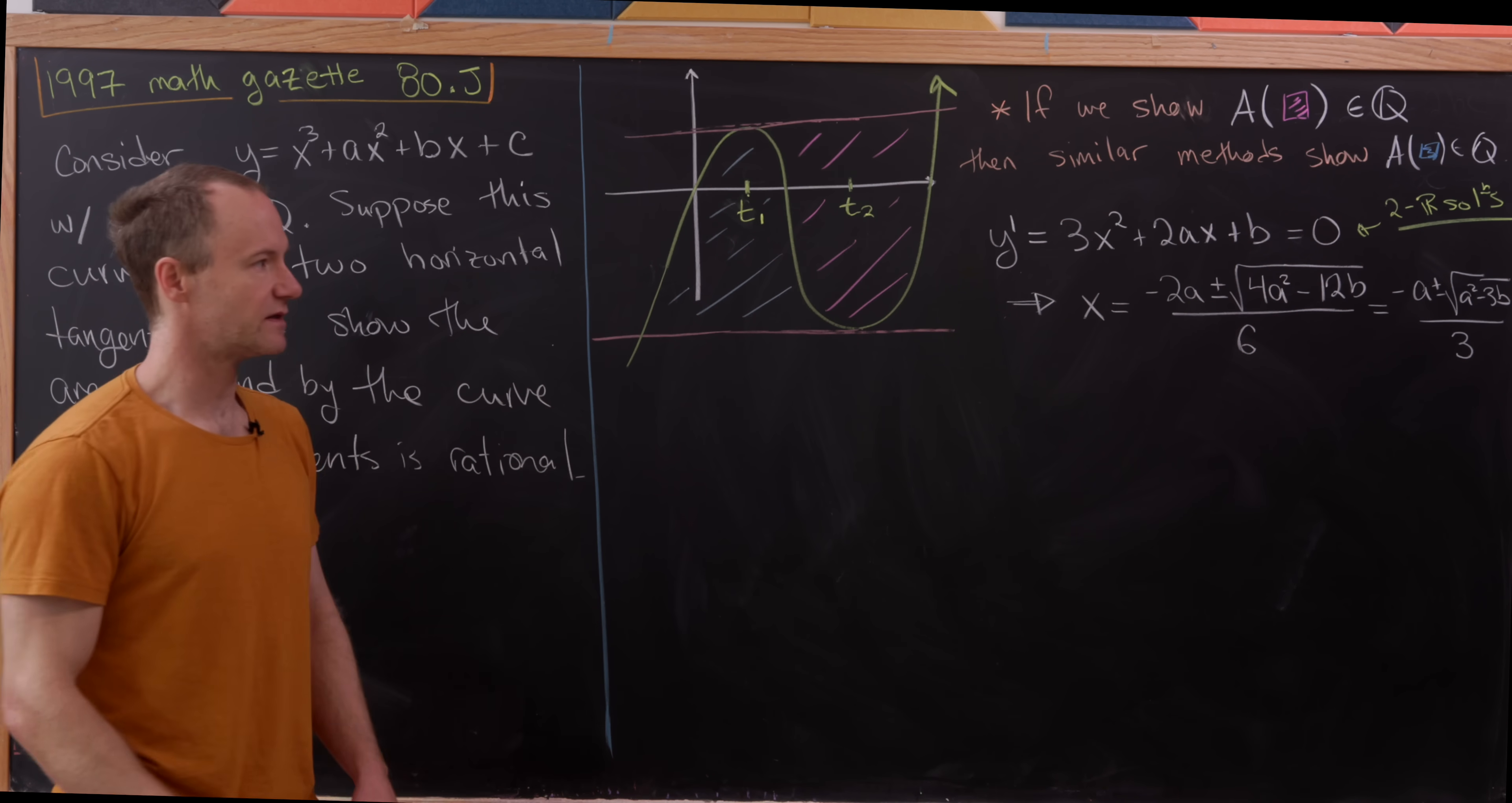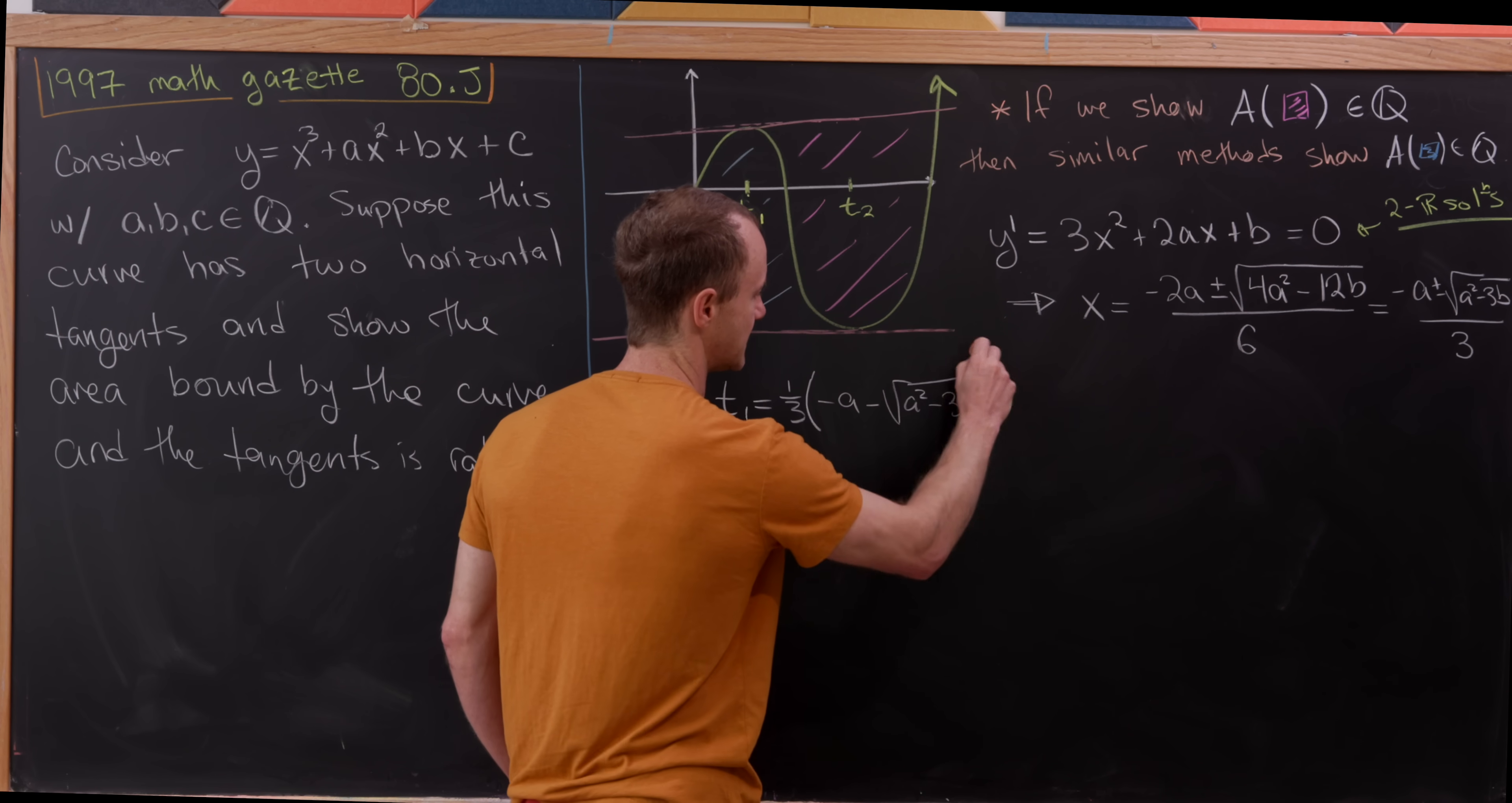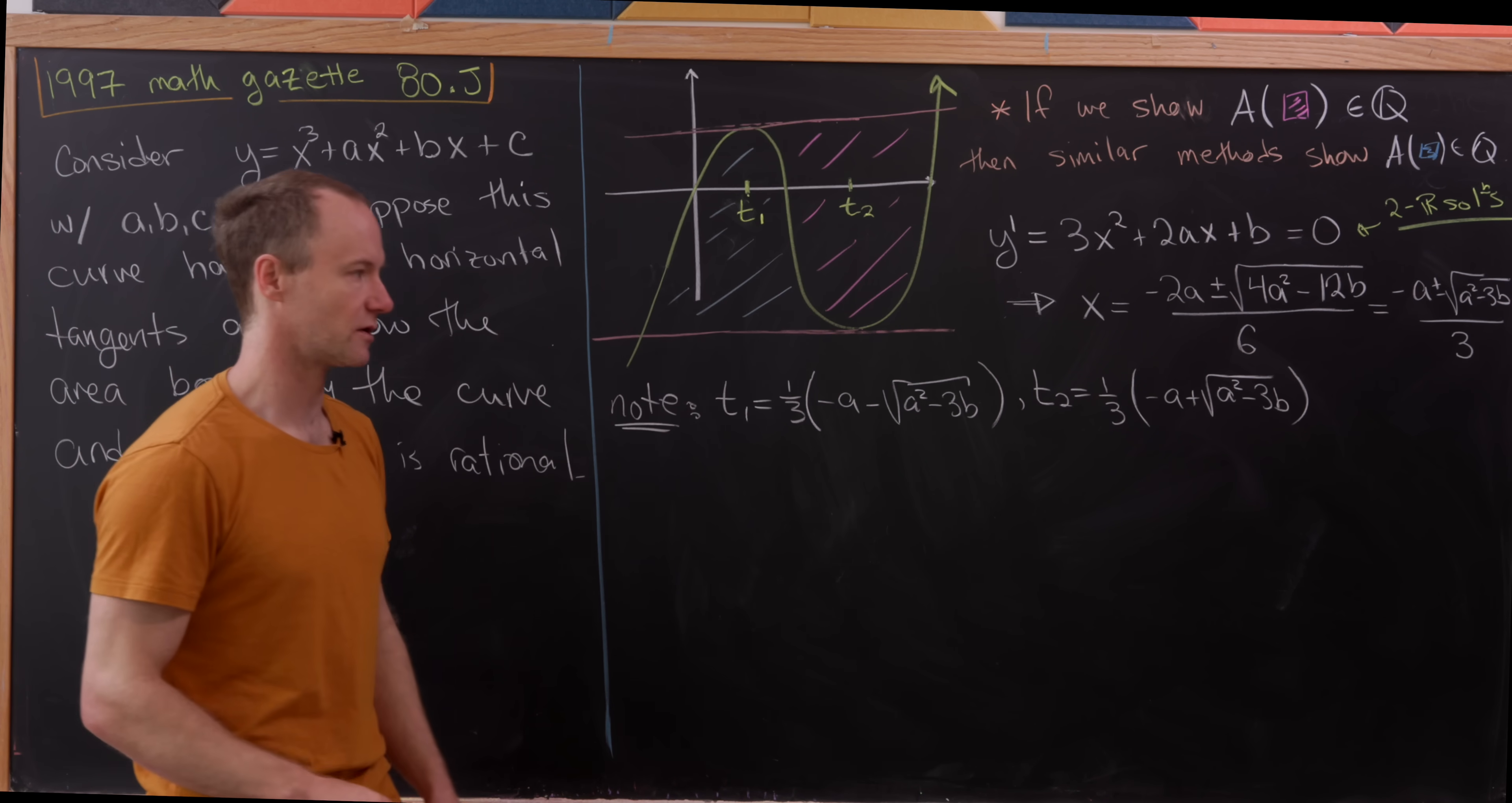So those are indeed the places where our two horizontal roots live, or horizontal tangent lines live. So let's put that as a note right here. So in fact, we know that t1 is equal to, I'm going to maybe take a third out front, and then we have a minus a minus the square root of a squared minus 3b, and then t2 will be its companion. So again, bring a third out front. And then we have minus a plus the square root of a squared minus 3b. And I know they're in that order just by the fact that I've put t1 to the left or smaller than t2.